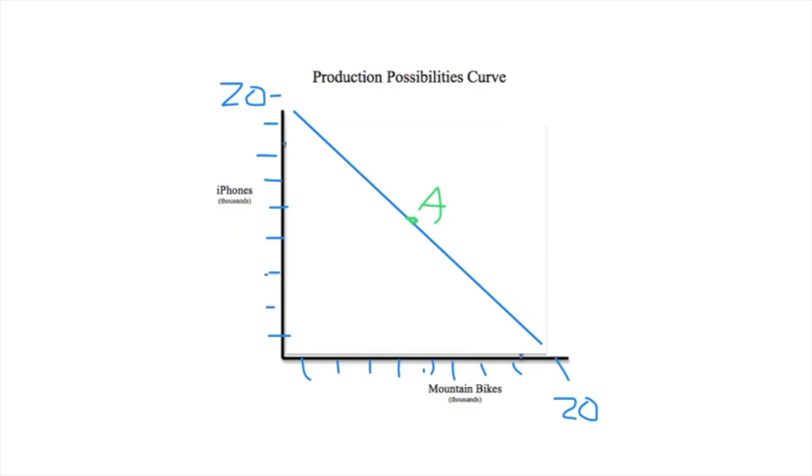So there's a direct relationship between making a mountain bike or making an iPhone, okay? And I'm telling you, this isn't what the production possibilities curve looks like at all. But what this says is it just shows you an idea that in order to get one thing, an iPhone, you have to give something up, and in this case a mountain bike.